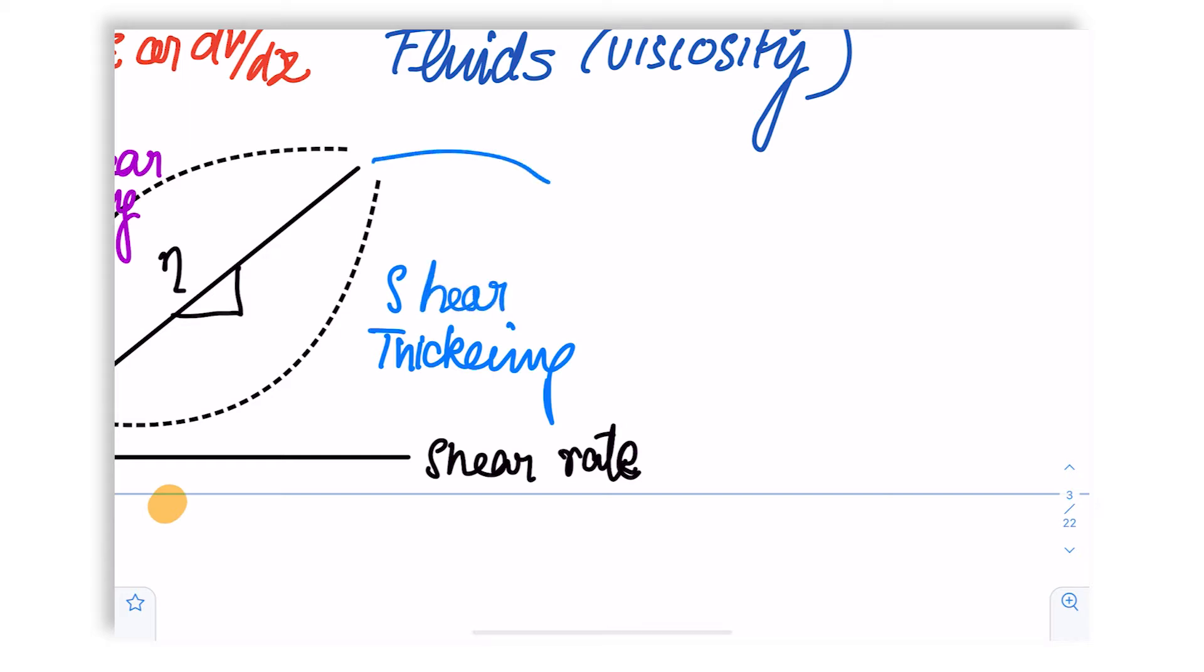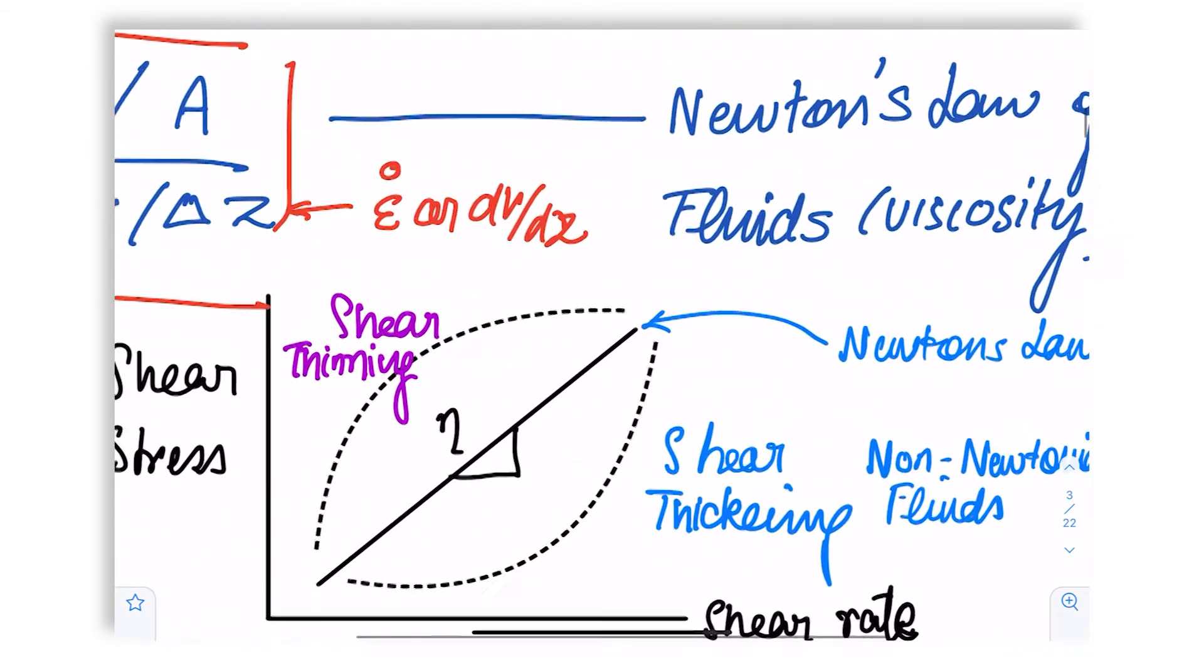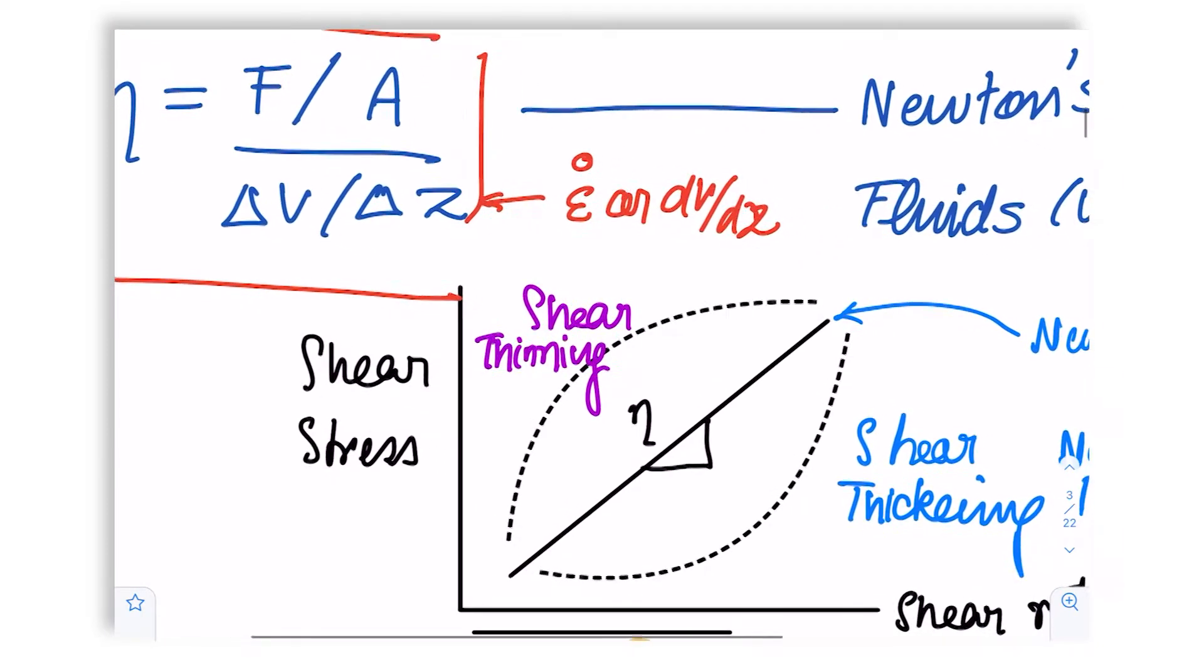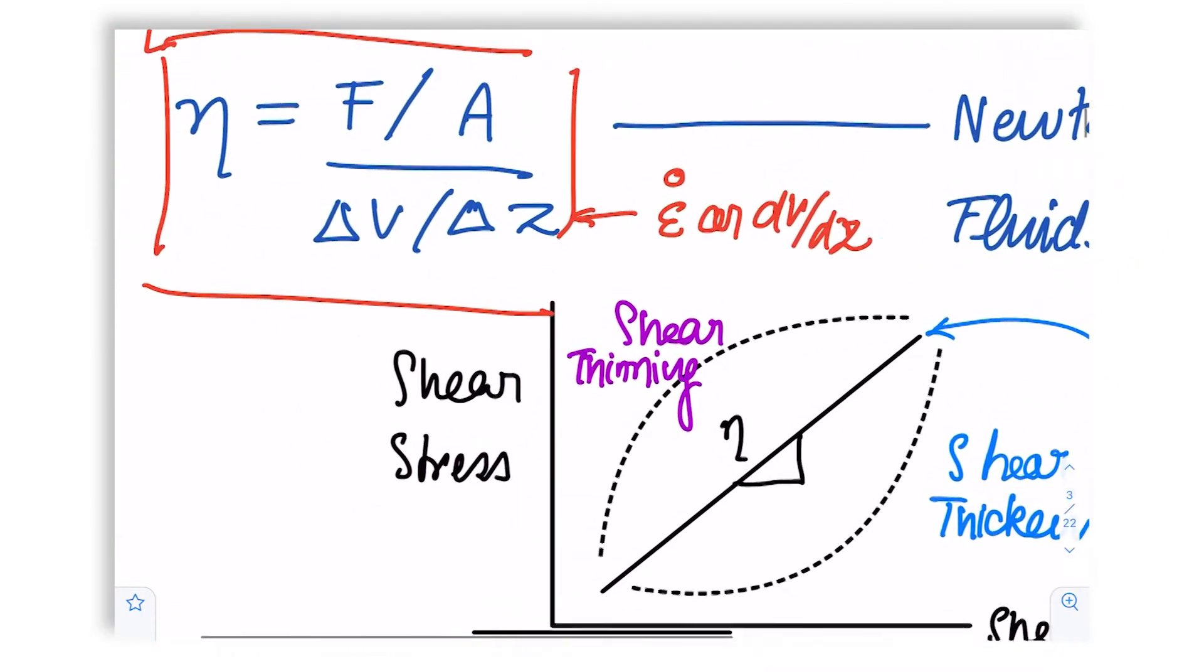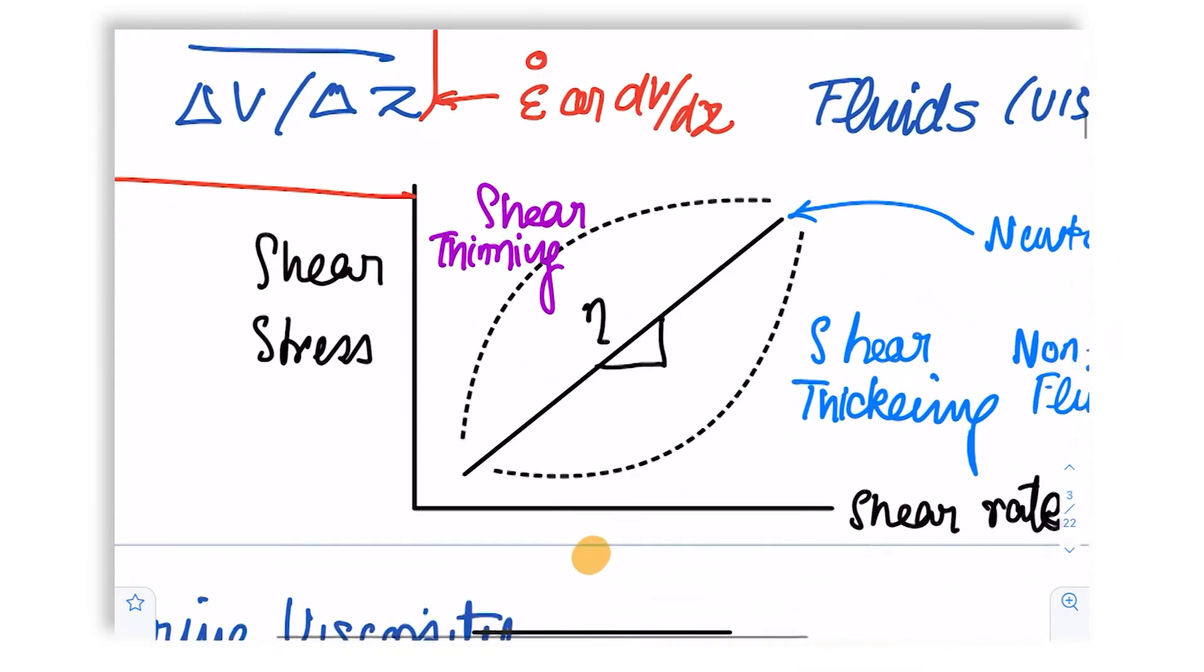So this is the average behavior, the standard behavior, and these deviations are then used to define what are called non-Newtonian fluids. Just to remind ourselves, eta is F by A upon delta V by delta Z. In other words, the stress upon the shear gradient or the velocity gradient or shear gradient.